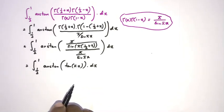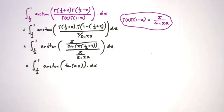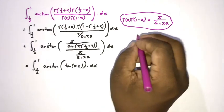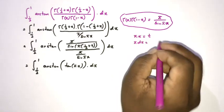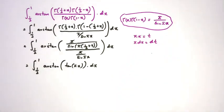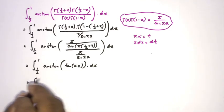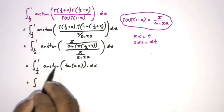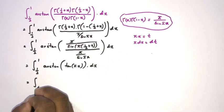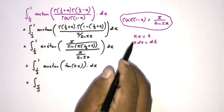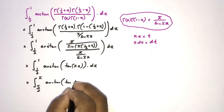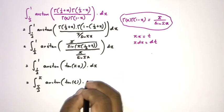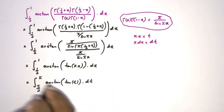Now you might think: can we just cancel arctan and tan? We can't directly. So we use the substitution t = πx, meaning π dx = dt. Changing the limits: when x = 1/2, t = π/2; when x = 1, t = π. So dx = dt/π, and the 1/π constant comes outside the integral.